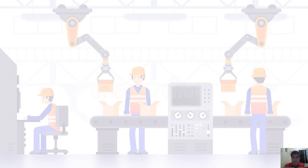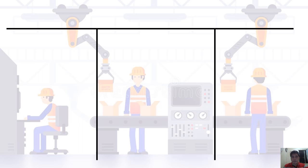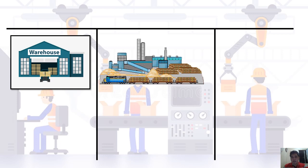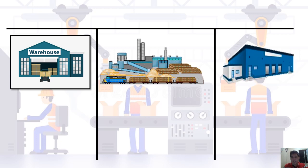Before proceeding to the actual preparation of the cost of goods manufactured report or the cost of goods sold report, let's have a visual presentation of how the manufacturing process works, so we can easily understand its components. In manufacturing, we have three major departments: first is the raw materials warehouse, second is the factory or the plant, and third is the finished goods warehouse.